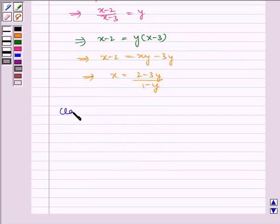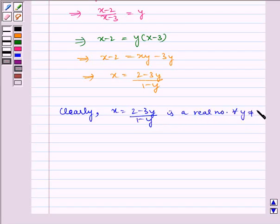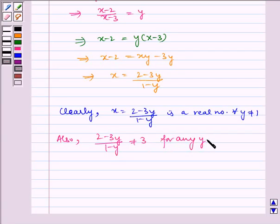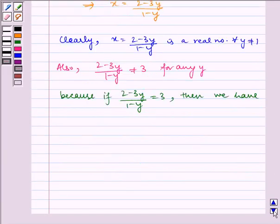Now, clearly, x is equal to (2 minus 3y) by (1 minus y) is a real number for all y not equal to 1. Also, (2 minus 3y) by (1 minus y) is not equal to 3 for any y, because if (2 minus 3y) by (1 minus y) is equal to 3, then we have 2 is equal to 3, which is not possible.